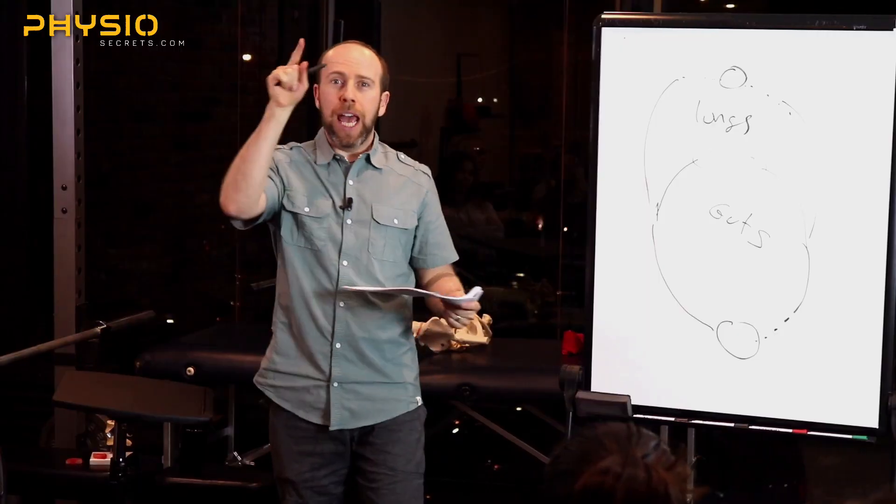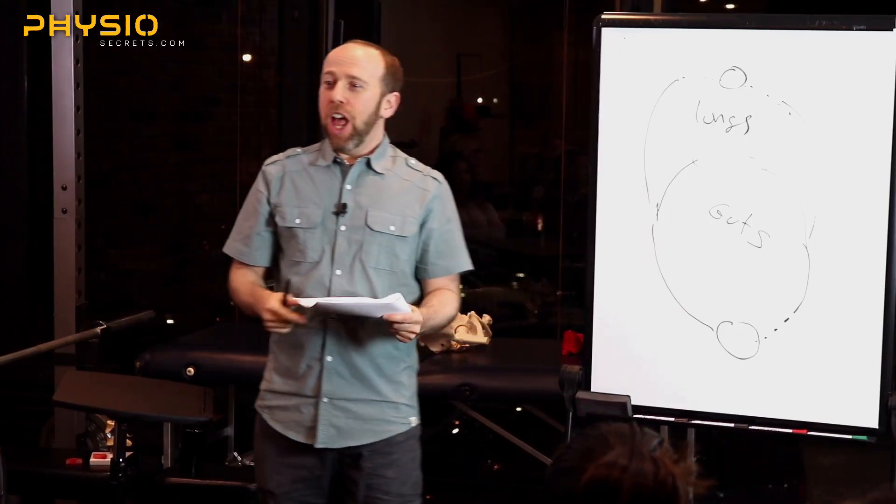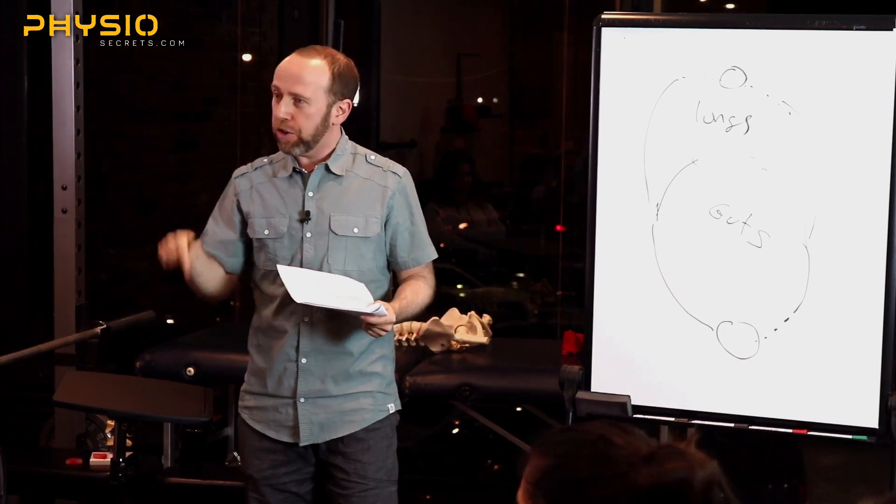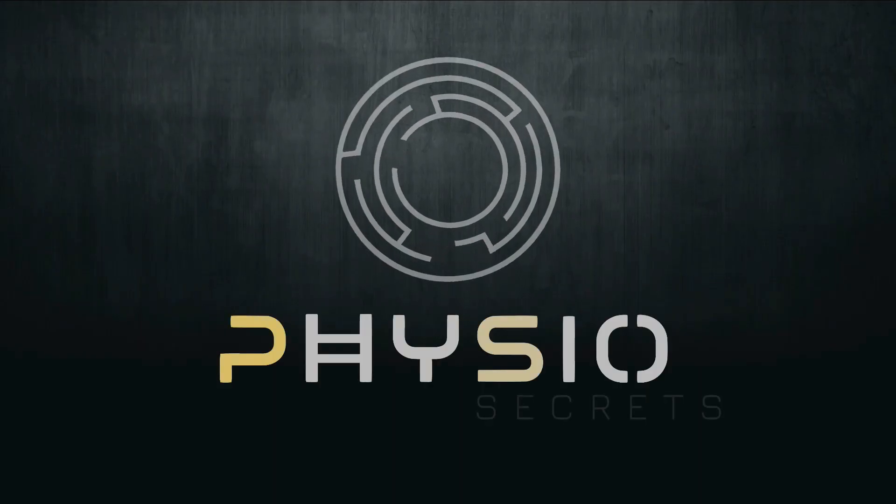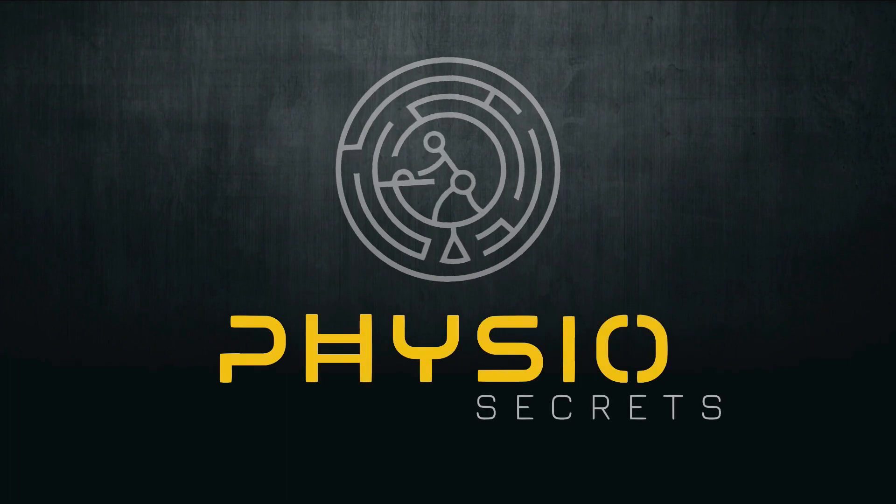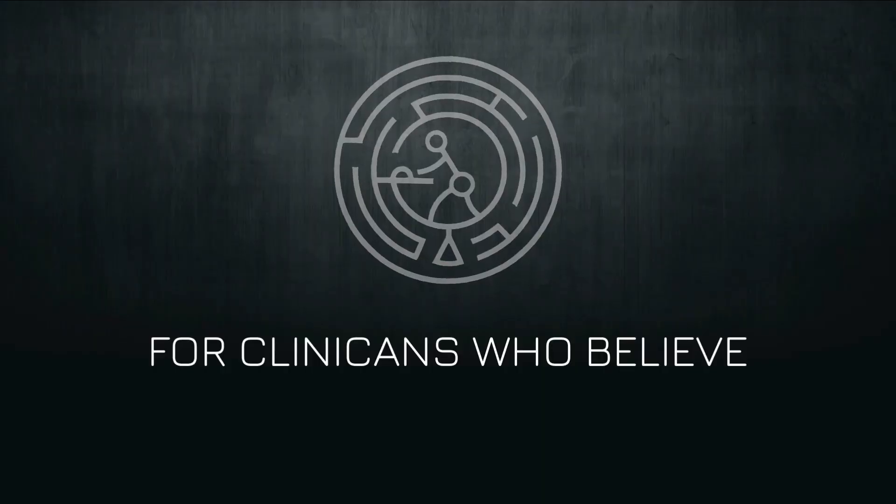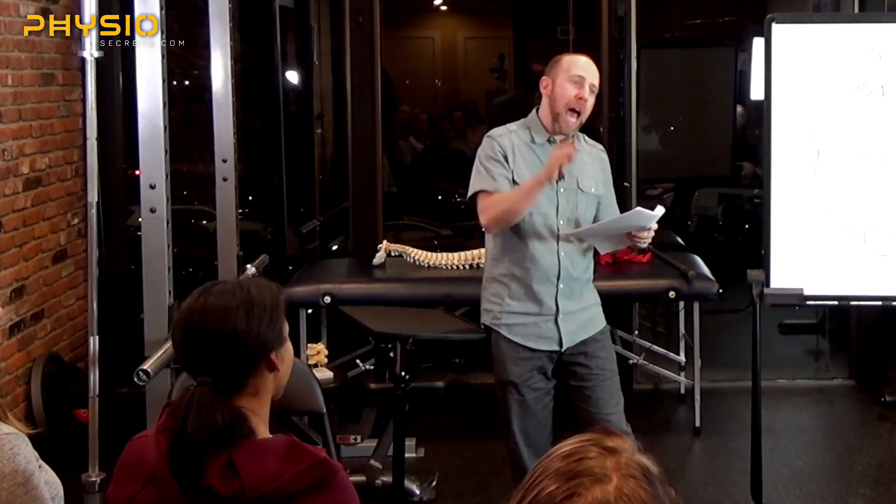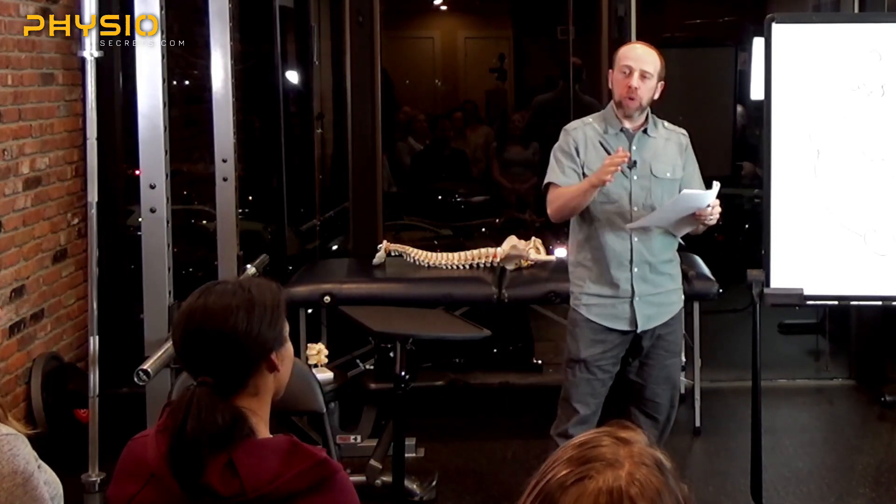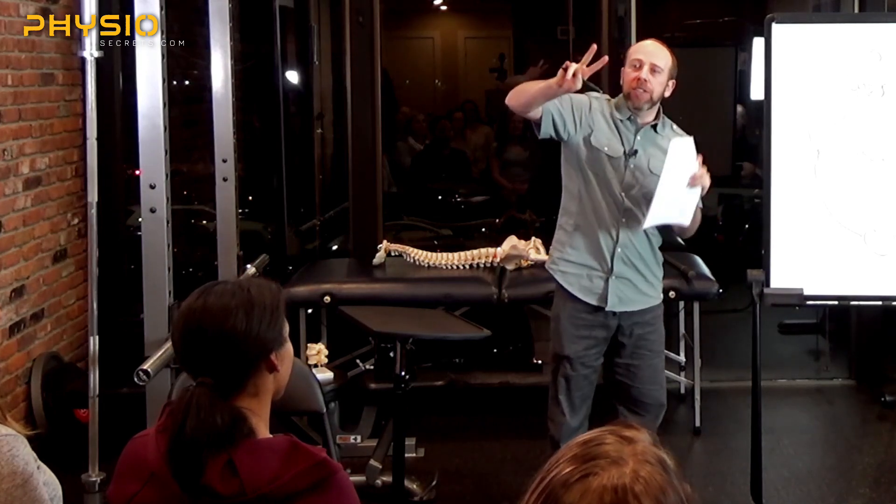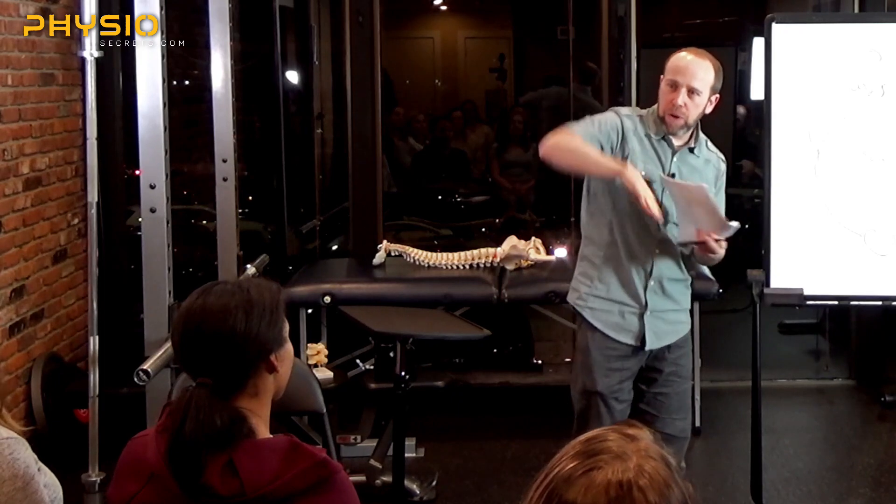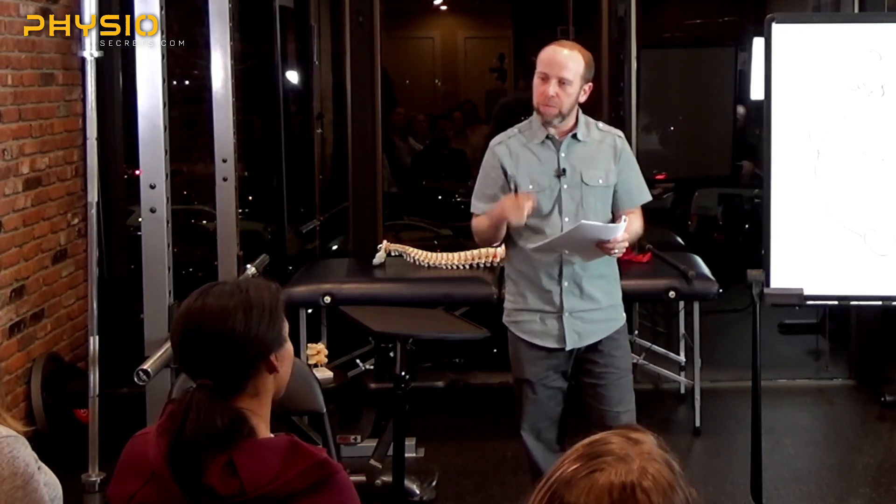I will tell you that thoracic outlet syndrome is not due to an elevated first rib. We learn in school that what happens is the first rib becomes elevated, then gets stuck elevated, and we have to go and mobilize the first rib down, we've got to give people first rib mobilizations.